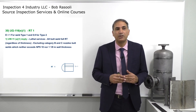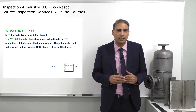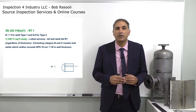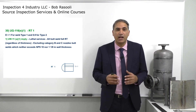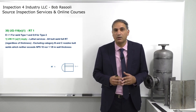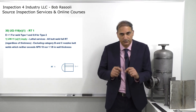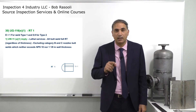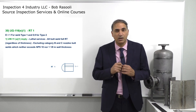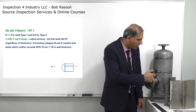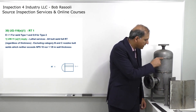What happens with RT1 is that UW-11(a)(1) implies lethal services — all butt welds require full radiography regardless of wall thickness, excluding category B and C nozzle or communicating chamber butt welds which neither exceed 10 inches in diameter nor 1-1/8 inch in wall thickness. The code requires full radiography when the service involves lethal or toxic substances, regardless of wall thickness — even if it's half an inch, we have to perform full radiography on all butt welds.